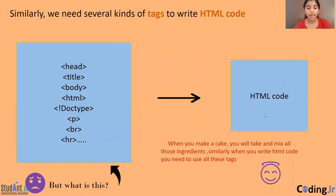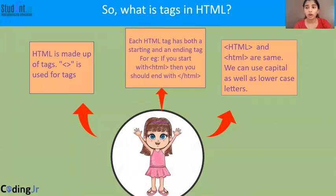So when we make a cake, we'll take the ingredients and mix them together. Similarly, when we have to write an HTML code, we need to use all these tags. So what are tags in HTML? All HTML tags are enclosed with this bracket, which is the less than symbol and greater than symbol.